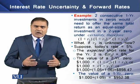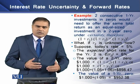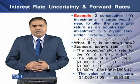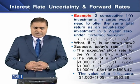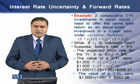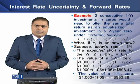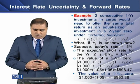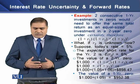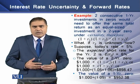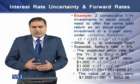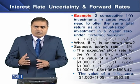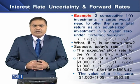What if R2 is unknown today? How do we determine the value of R2? Suppose today's rate is 5 percent, then the expected short rate for year 2 is equal to 6 percent. Using this value, the value of a two-year zero bond will be equal to 1000 divided by 1 plus R1 into 1 plus R2.